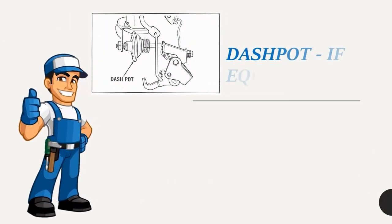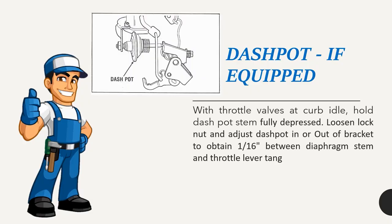Dashpot (if equipped): With throttle valves at curb idle, hold dashpot stem fully depressed. Loosen lock nut and adjust dashpot in or out of bracket to obtain 1/16-inch between diaphragm stem and throttle lever tang. Tighten lock nut.